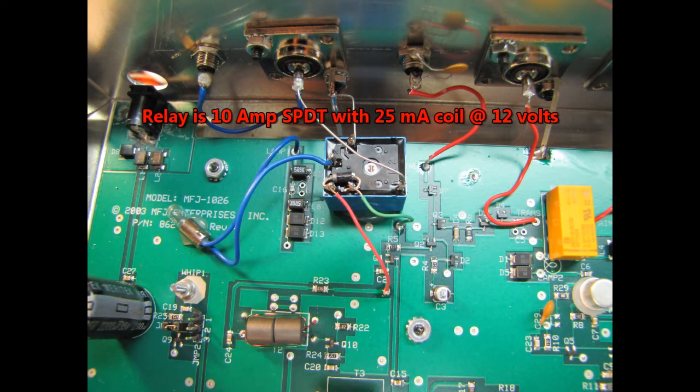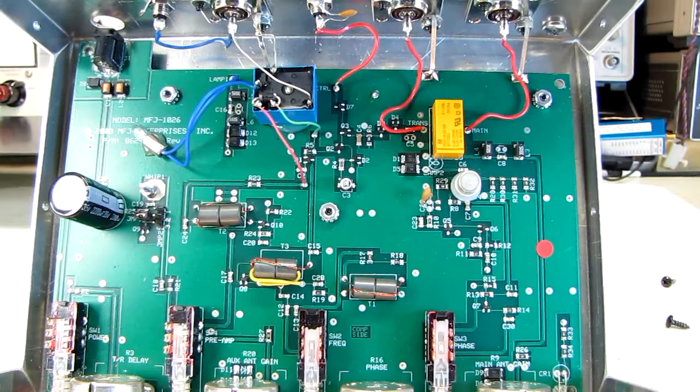I did put a diode on here so that there's no back EMF from the coil. Even though the MOSFET's protected and there was one on the board, I always like to put a backup so nothing's going to spike the transistor.